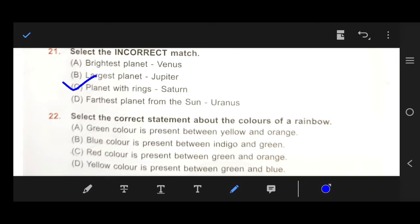Next, number 22, select the correct statement about the colors of a rainbow. Green color is present between yellow and orange. Blue color is present between indigo and green. Number C, red color is present between green and orange. Number D, yellow color is present between green and blue. Our right answer is blue color is present between indigo and green. So, our right answer is blue.